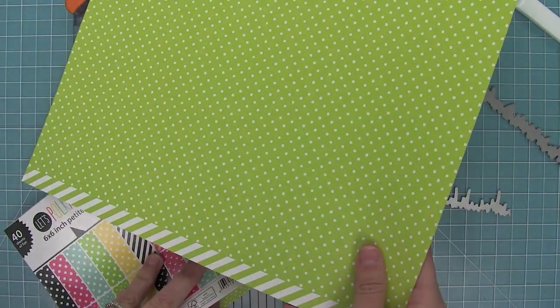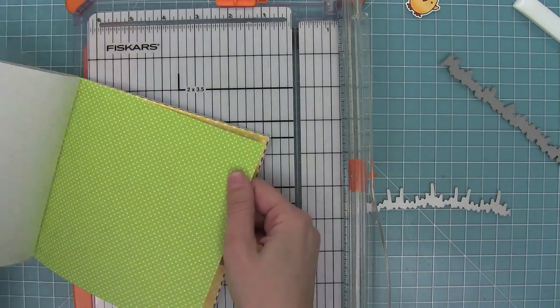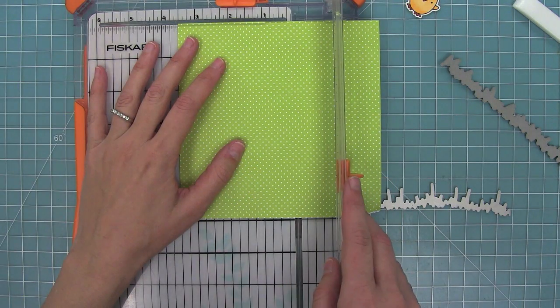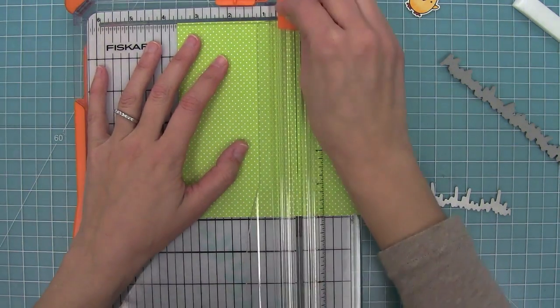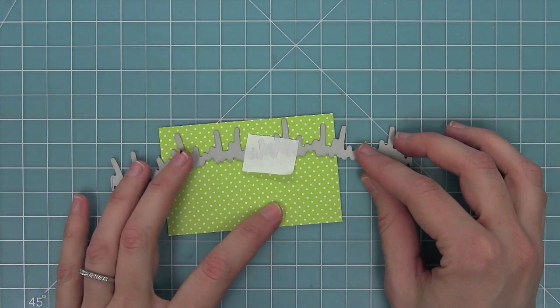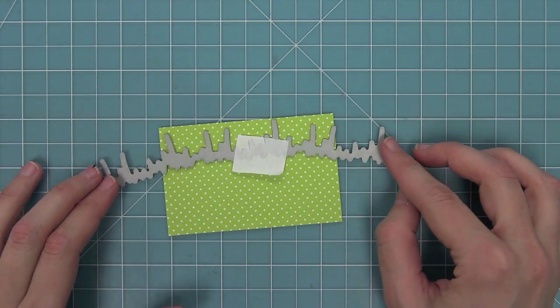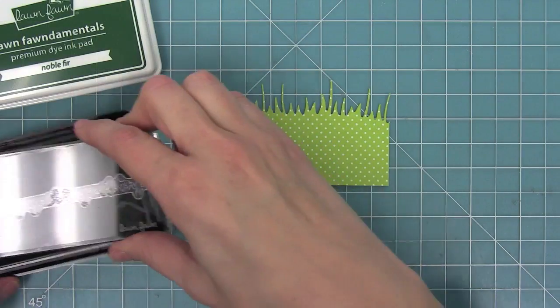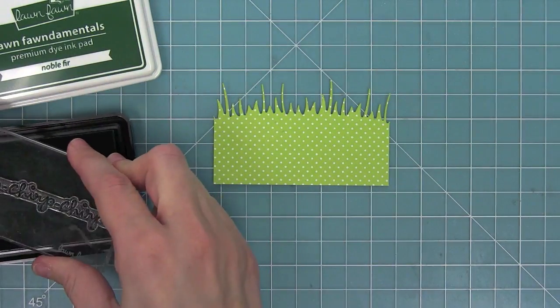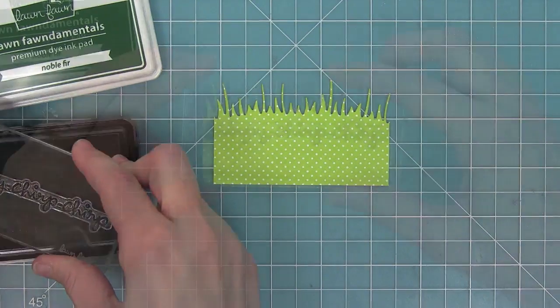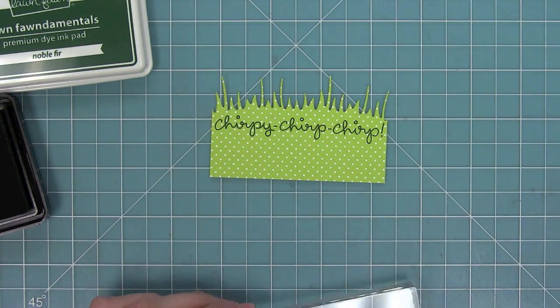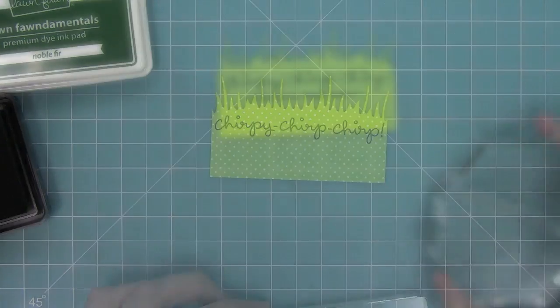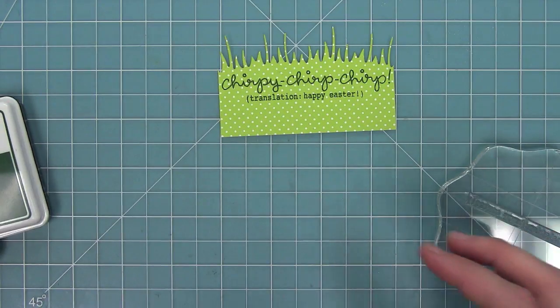The new Let's Polka in the Meadow colors coordinate so well with the perfectly plaid, so I'm going to take this grasshopper polka color, cut it down to three and a half inches wide, which is the width of the bag, and cut it with the brand new Meadow Borders die. I just love this gorgeous tall grass. Now I'm going to take some stamps from Chirpy Chirp Chirp and stamp my sentiment on this grass panel. I'm using some Noble Fur ink and I'm going to stamp Chirpy Chirp Chirp and then Translation Happy Easter.